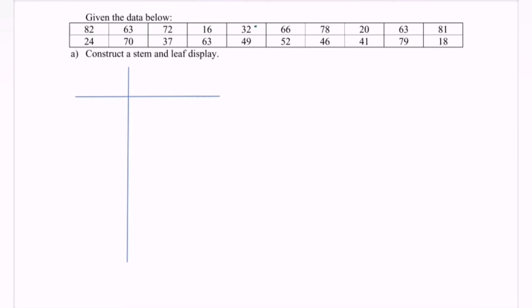Given the data below, the question asks us to construct a stem-and-leaf display. A stem-and-leaf display, or stem plot, is the vertical arrangement of data that sorts the scores from the least to the greatest. It's useful in exploratory data analysis.